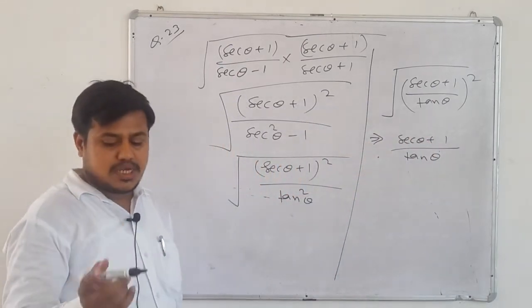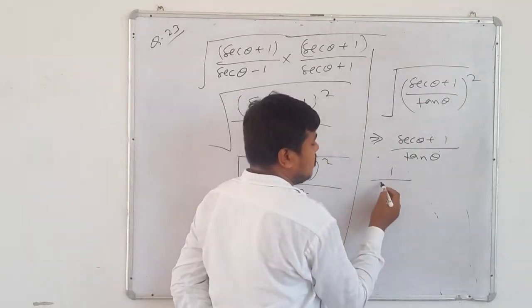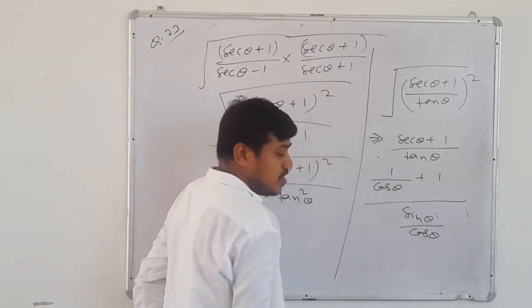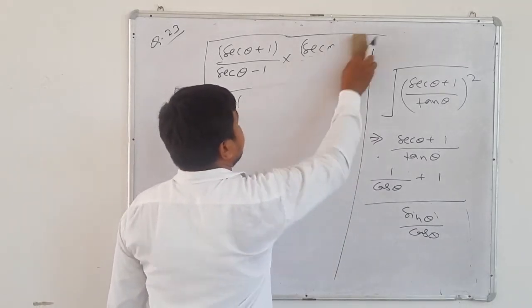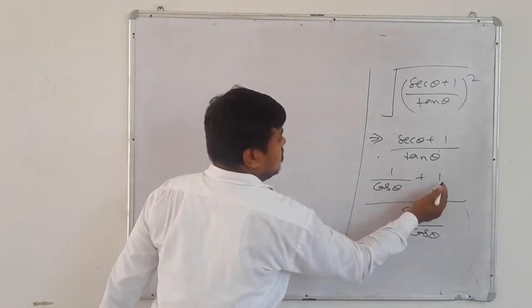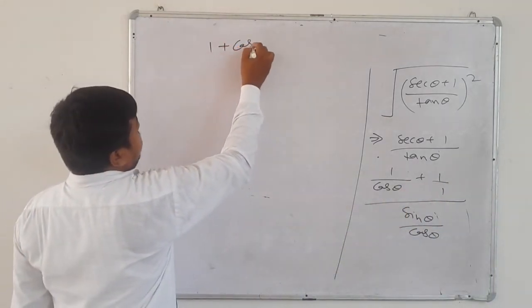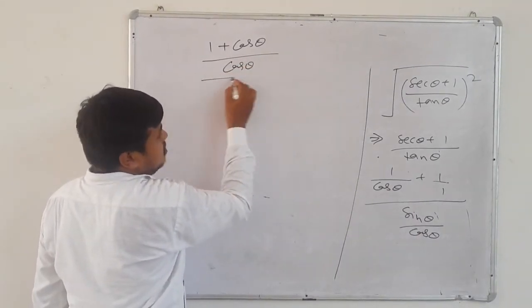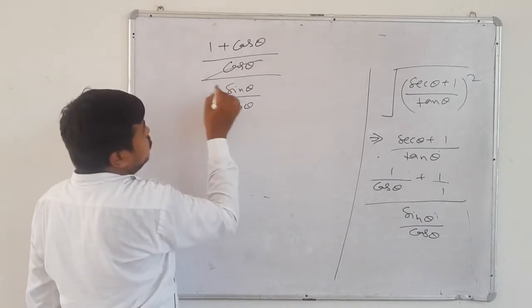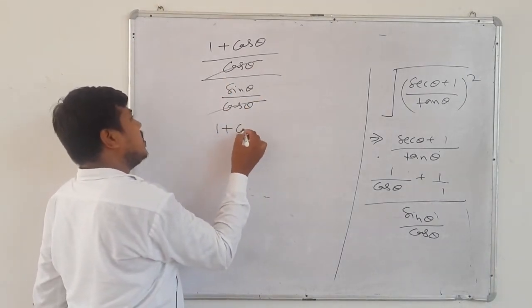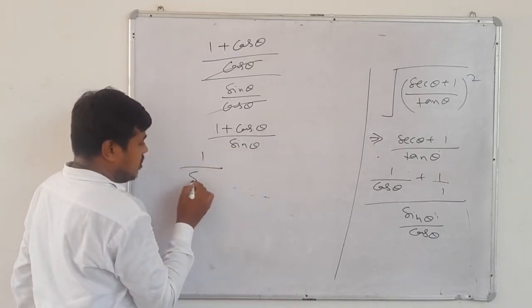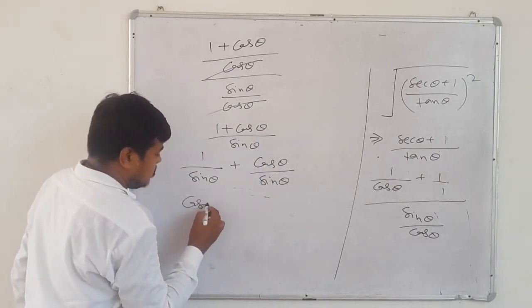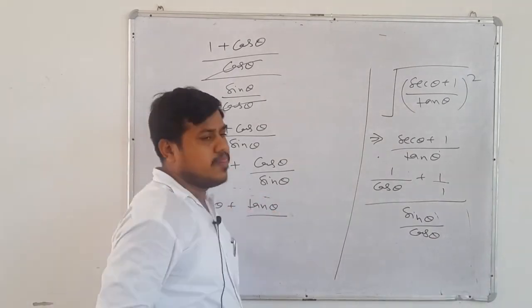The question asks us to prove cot θ + cosec θ. Change to sin/cos: sec θ = 1/cos θ, so numerator becomes 1/cos θ + 1. Denominator: tan θ = sin θ/cos θ. Take LCM in numerator — LCM of cos θ and 1 is cos θ — giving (1 + cos θ)/cos θ. Upon sin θ/cos θ: cos cancels, remaining is (1 + cos θ)/sin θ. Dividing separately: 1/sin θ + cos θ/sin θ = cosec θ + cot θ. Hence proved.